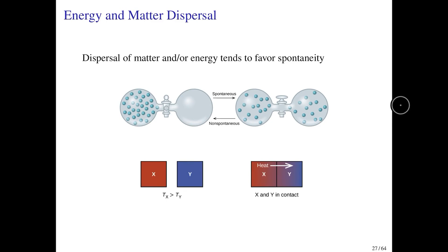In this graphical example, what we are going to note are the experimental observations that processes that are accompanied by a dispersal of matter and/or energy tend to be spontaneous. Now, I use the word 'tend to' very softly—that is, spontaneity is favored when matter is dispersed in the system.